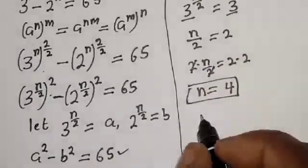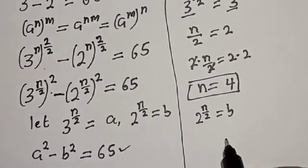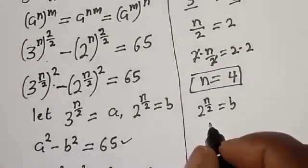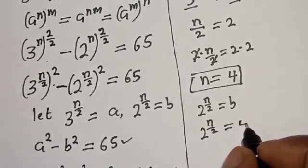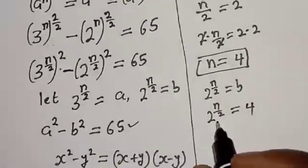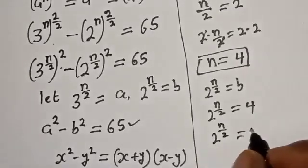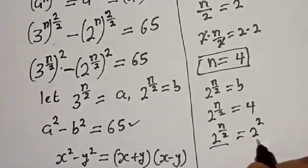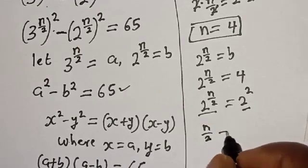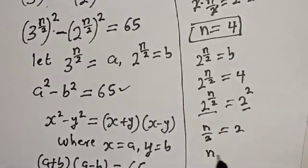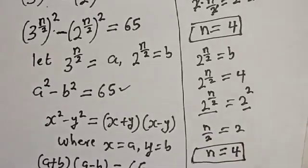Let's also check using b. We have 2 raised to power (n/2) equal to b, and b is 4. So 2 raised to power (n/2) equals 4, which is 2 squared. Same base gives n/2 equals 2, and cross-multiplying gives n equal to 4. This confirms our answer.